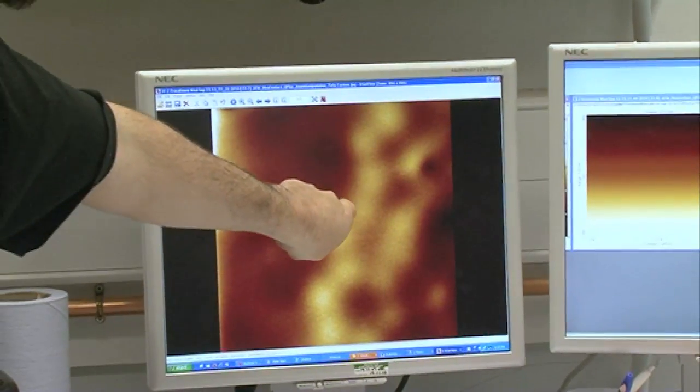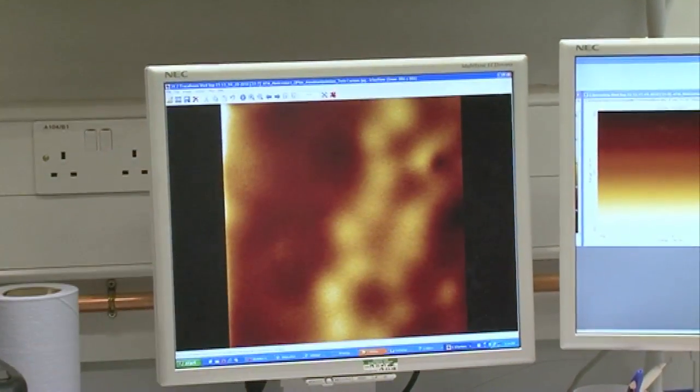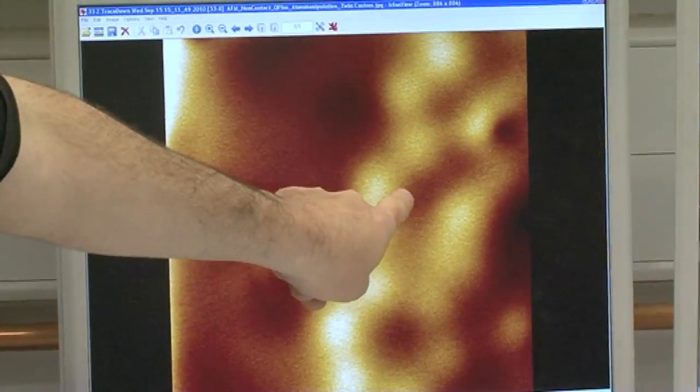And then what we've done is we've brought the tip in above this atom and we've pulled it up. And then what happens is it looks like that. So now we can see the up atom and the down atom has done that. So we've got a flip, we've got a toggle. We've toggled this switch between those two states on a single atom, single chemical bond basis.